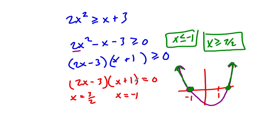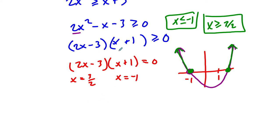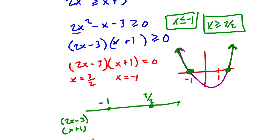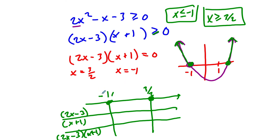Now, if you want to do a signs analysis, you can do that as well. You would know that it equals 0 at negative 1 and then 3 halves. Draw a number line, then write out the factors: 2x minus 3 and x plus 1 and their product. Everything's solid here because we can include these values. Plug in a value below negative 1, negative 10, let's say. That would be negative 20 minus 3, that's negative. Negative 10 plus 1 is negative and their product is positive.